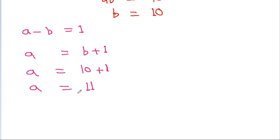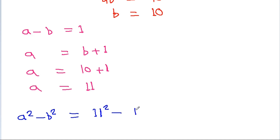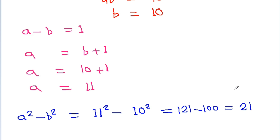Now we find the value of a² - b². With a = 11 and b = 10, we get 121 - 100 = 21. So the required value is 21.